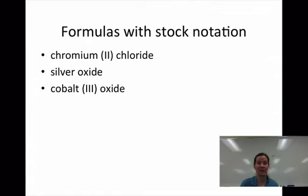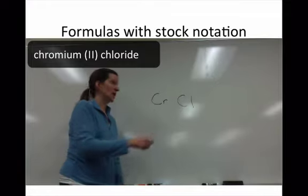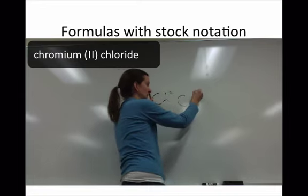Getting the formula for the name is no different than for the binary ionic. The difference here is that I'm actually giving you the charge with the Roman numeral rather than you having to determine the charge from the periodic table. So if we look at this example, chromium chloride, the Roman numeral that's given to you is plus 2 and we know chlorine is minus 1.